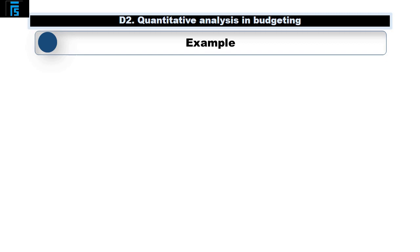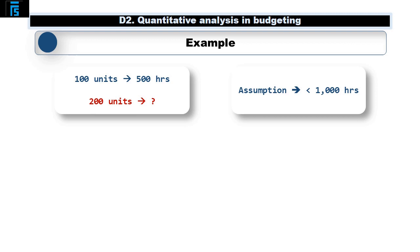The basic idea of the calculations we need to perform is to consider the percentage decrease in the cumulative amount of time it takes each time the output doubles. So, for example, if we start off making 100 units in a batch and that takes 500 hours, we want to know how long it would take to make 200 units or two batches. Assuming that the learning curve effect is working, we would expect the 200 units to take less than 1000 hours. That is two batches at 500 hours per batch.